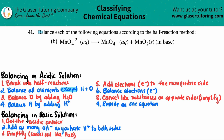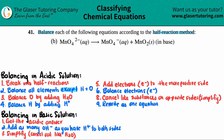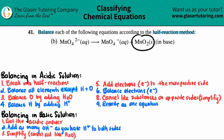Number 41 — balance each of the following equations according to the half reaction method. For letter B, we have to balance MnO4²⁻ aqueous, which will yield MnO4⁻ aqueous plus MnO2 solid. And we have to do this in a basic solution.